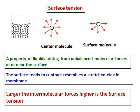We can call surface tension as a property of liquid arising from unbalanced molecular forces at or near the surface. Because of this, the surface tends to contract and resembles a stretched elastic membrane. Larger the intermolecular forces, higher will be the surface tension.